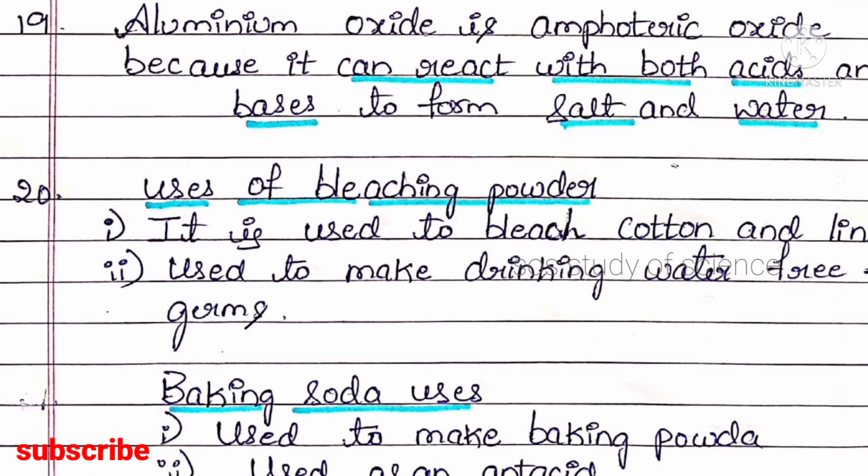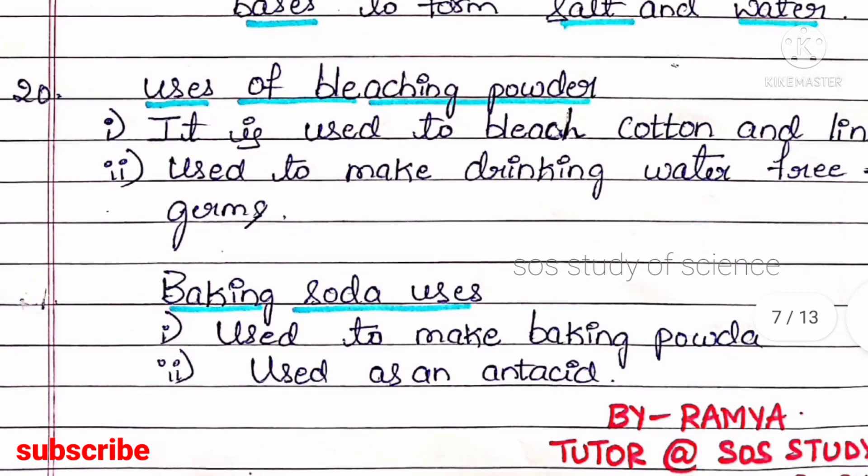Question 20 asks for two uses each of bleaching powder and baking soda. Bleaching powder is used to bleach cotton and linen, and also to make drinking water free from germs. Baking soda is used to make baking powder, and it is also used as an antacid. Writing these two points will get you two marks.